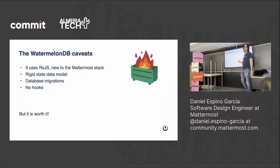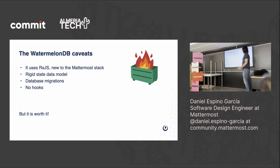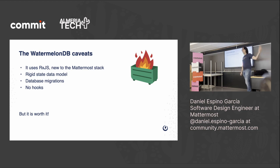Pero no es todo bien. Cuando eliges algo para solucionar tus problemas, lo raro es que no crees problemas propios; la cuestión es si te merece la pena. Los problemas de WatermelonDB: usa RxJS, que no usamos en ninguna otra parte del stack, es tecnología nueva que hay que aprender. También es una base de datos: tienes que tener migraciones, tipos de datos bien definidos. Y me duele que en browser estoy intentando eliminar connect, mapStateToProps y todo eso para ponerlo en functional components, pero en mobile lo tengo que meter de vuelta.